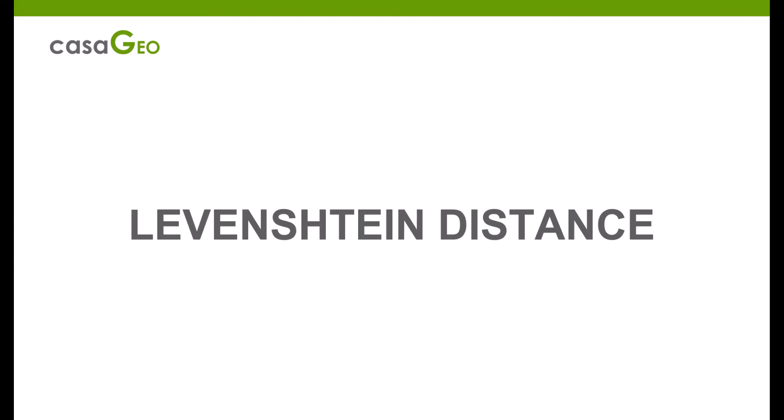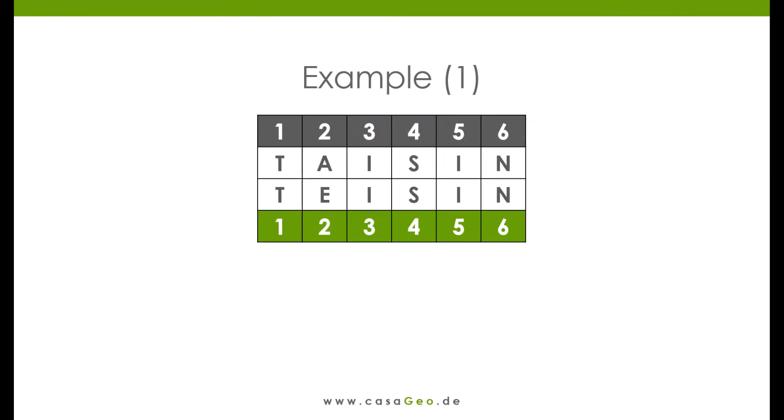Quite simply, Levenshtein counts the changes required to get from one string to another. Let's look at my name as a first example. A mistake has crept into the spelling. We have to replace the E with an A. One letter is changed and the other five letters remain the same.